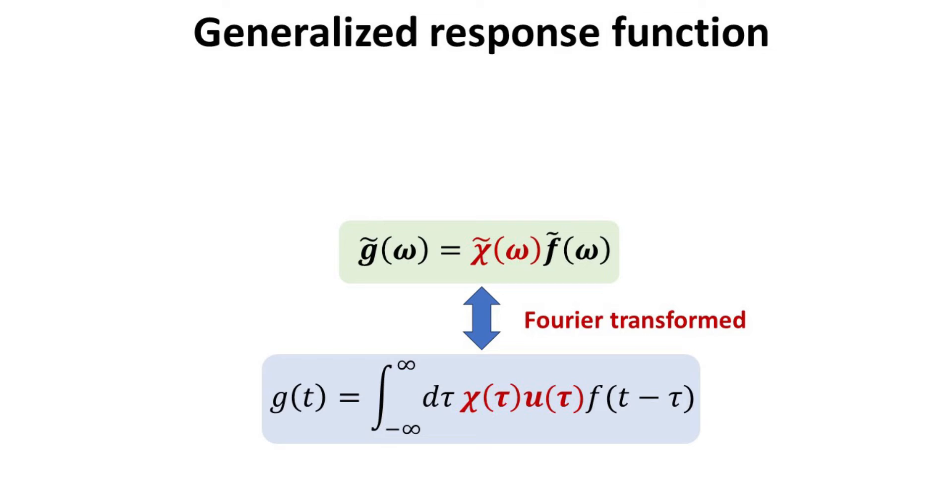Taking the Fourier transform, one can show the well-known mathematical result that the Fourier transform of a convolution of two functions is the point-wise product of their Fourier transforms.